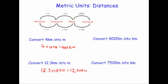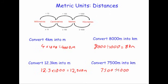Next, convert 8000 metres into kilometres. To go from metres to kilometres you divide by 1000, so 8000 divided by 1000 equals 8 kilometres. Finally, convert 7500 metres into kilometres: 7500 divided by 1000 — move the decimal place three times — equals 7.5 kilometres.